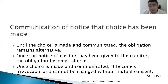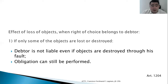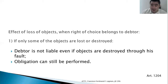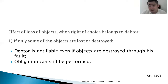What is the effect of loss of objects when the right of choice belongs to the debtor? If only some of the objects are lost or destroyed, the debtor is not liable even if the objects are destroyed through his fault, because the obligation can still be performed.